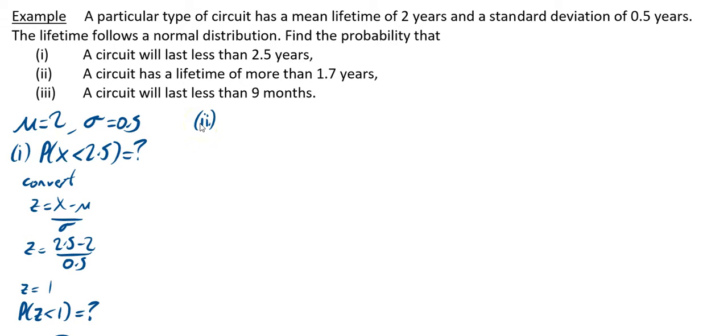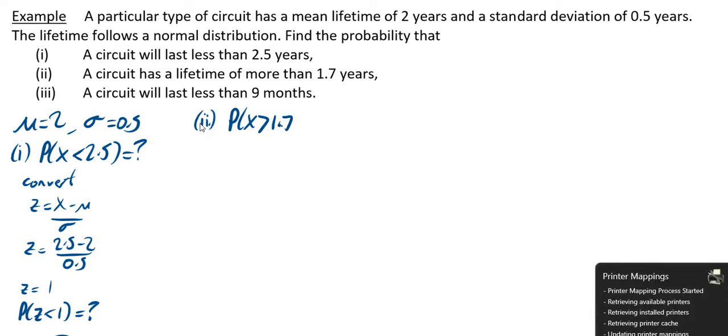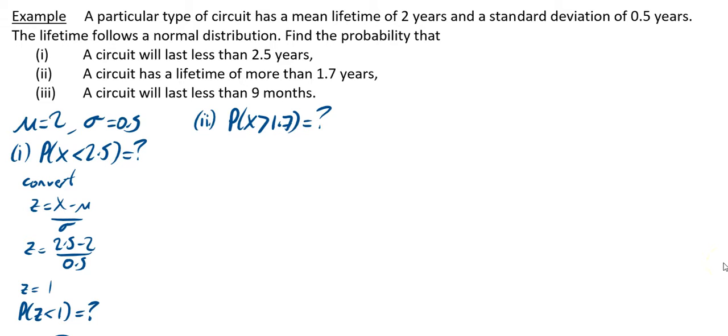Part two asks you to find the probability that a circuit has a lifetime of more than 1.7 years. So probability X is greater than 1.7, and that's what we're looking for here. In this case, you want to convert. So Z equals X minus μ over σ.